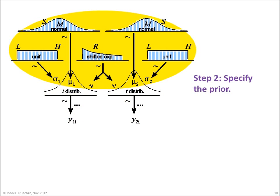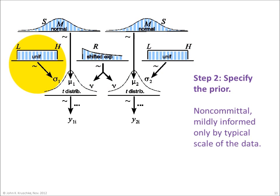The second step in Bayesian analysis is to specify the prior credibilities of the possible parameter values. The upper part of the diagram, highlighted in yellow, illustrates the prior distribution. For example, on the far left, the prior distribution on sigma1 is a uniform distribution, spanning a range from an extremely low value, L, to an extremely high value, H. For all the parameters, the prior distributions in this application are non-committal and only mildly informed by the typical scale of the data. This means that the prior probabilities have minimal influence on the posterior probabilities.